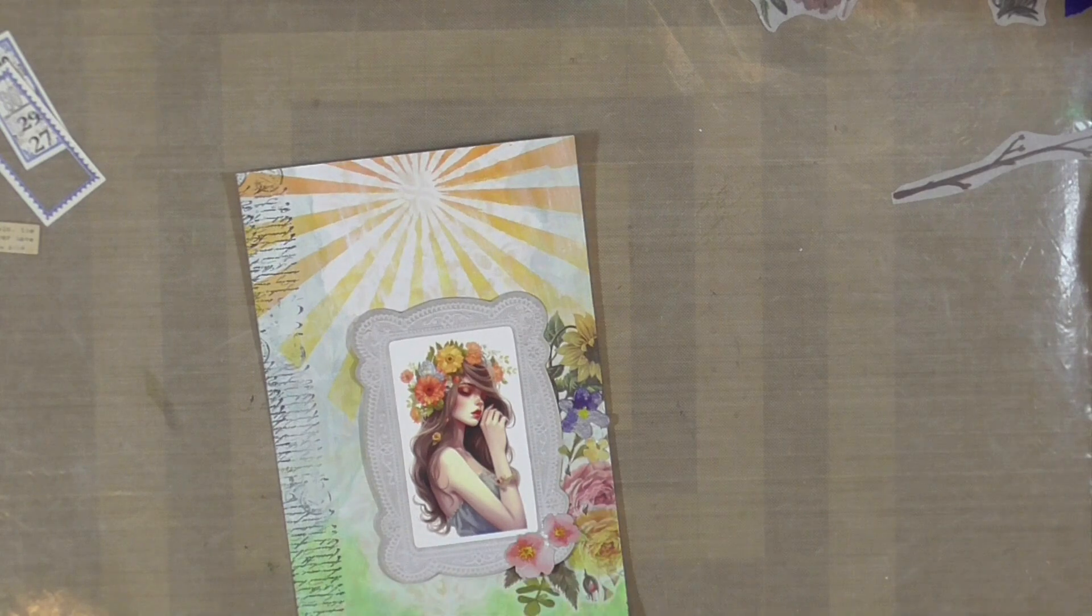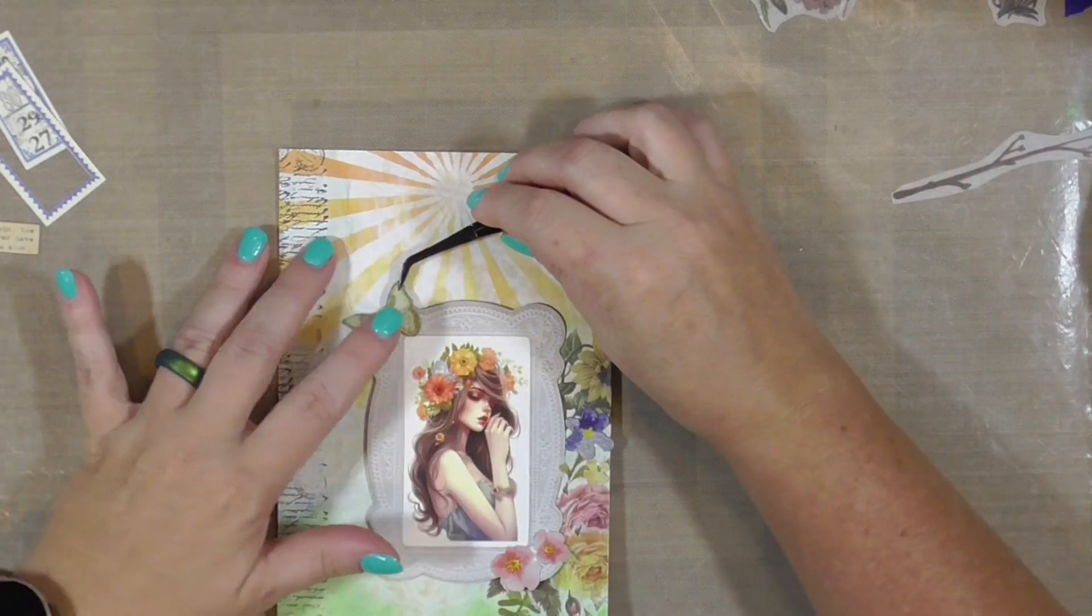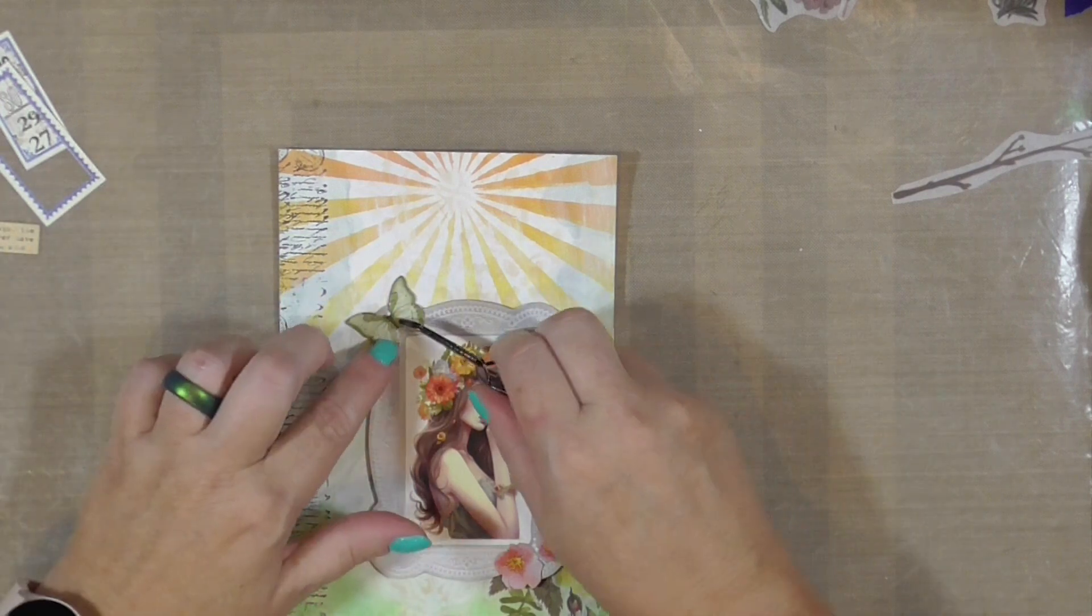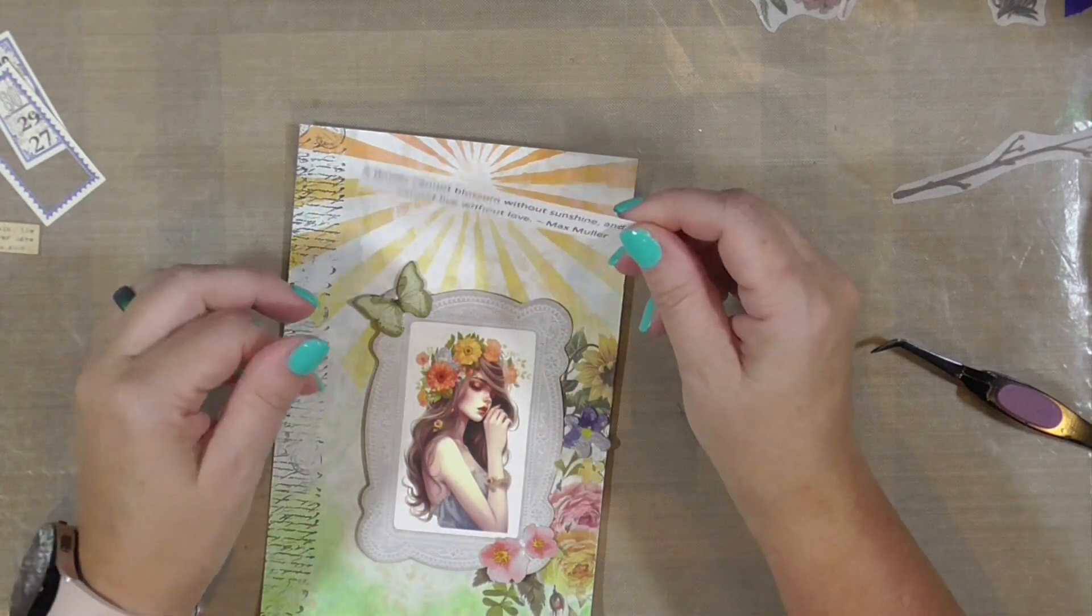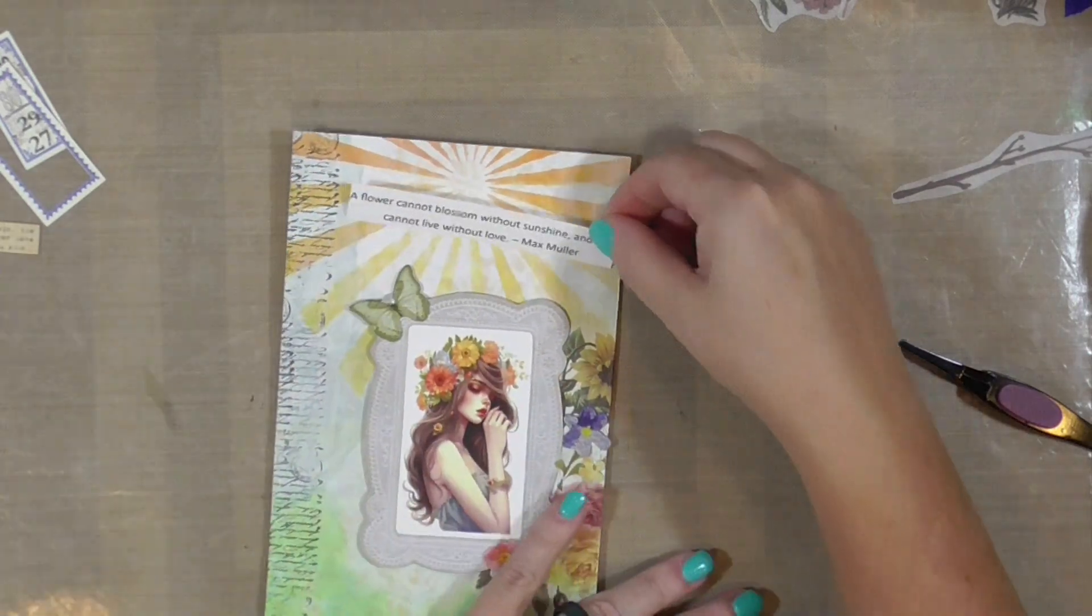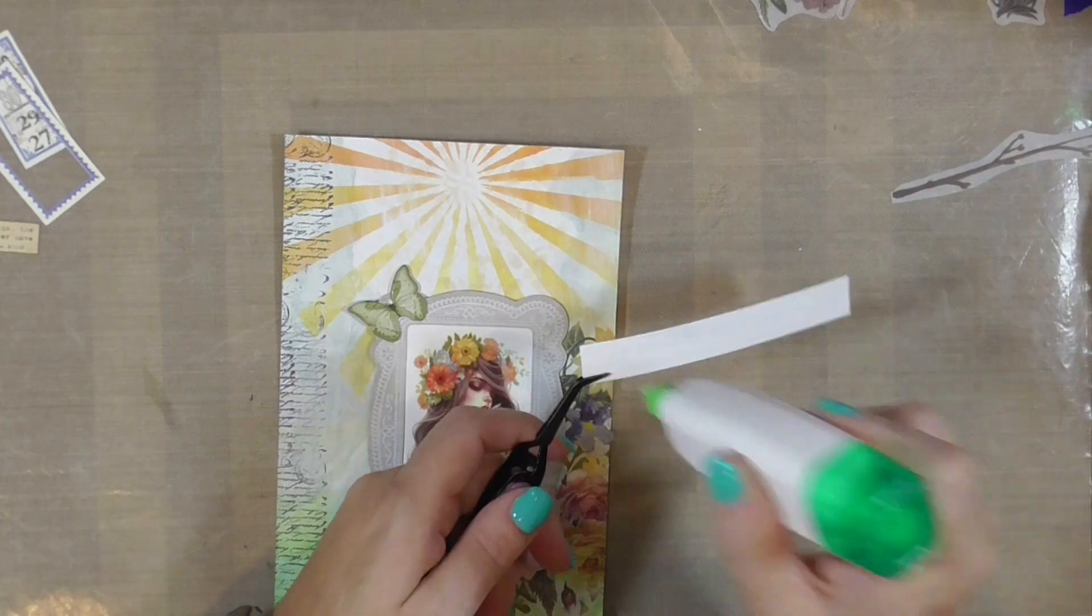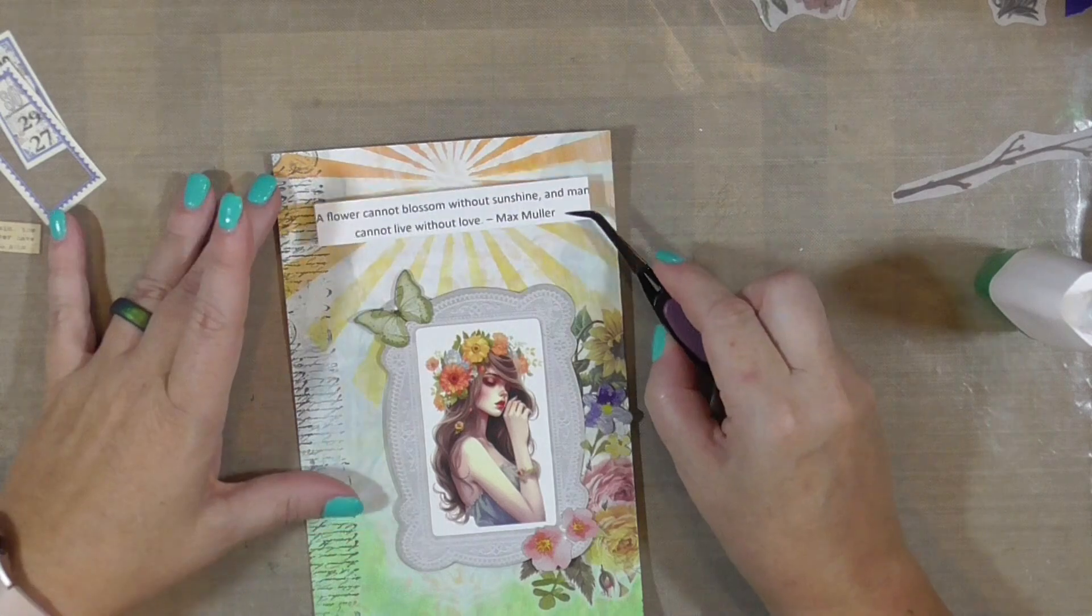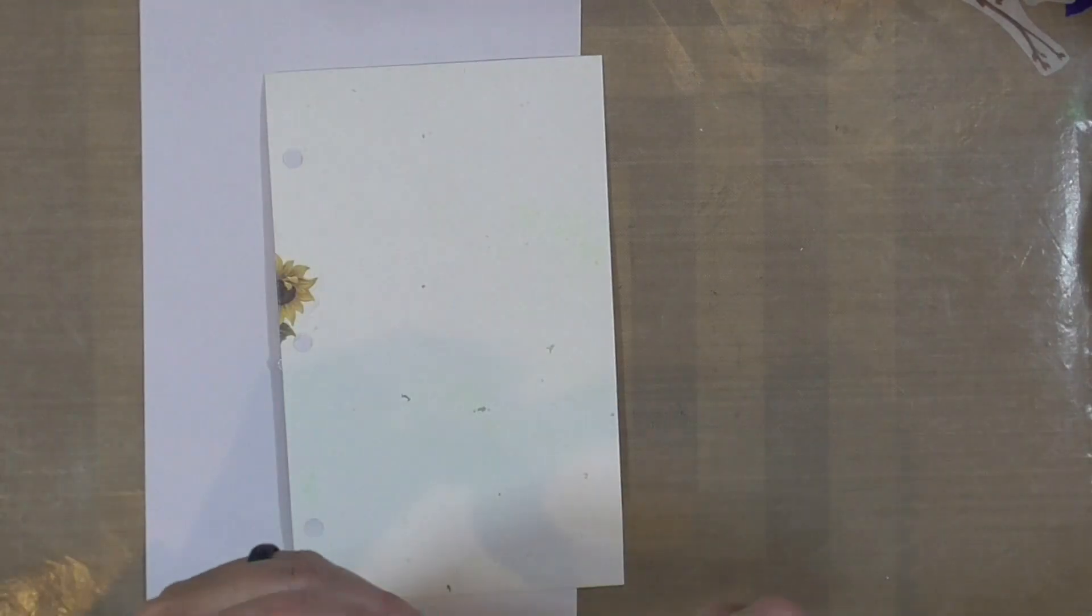So this little green butterfly is also a Stamperia chipboard. I'm going to put it on the top left corner of that frame. And all that is left now, I think is to add a quote. And I found a quote that says a flower cannot blossom without sunshine and man cannot live without love. And that is attributed to Max Mueller. So I printed that on a piece of copy paper when I printed out my mood board. And I'm just going to add that to the top of my page with a little bit of Tombow liquid glue. I'm mostly centering it. I think it's high enough that the holes from the hole punch won't bother it too much.